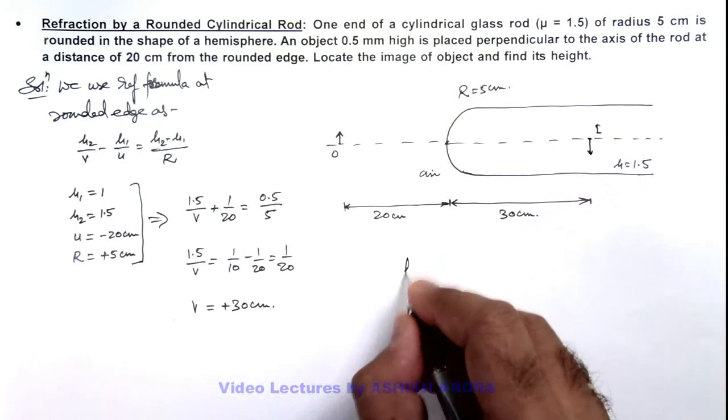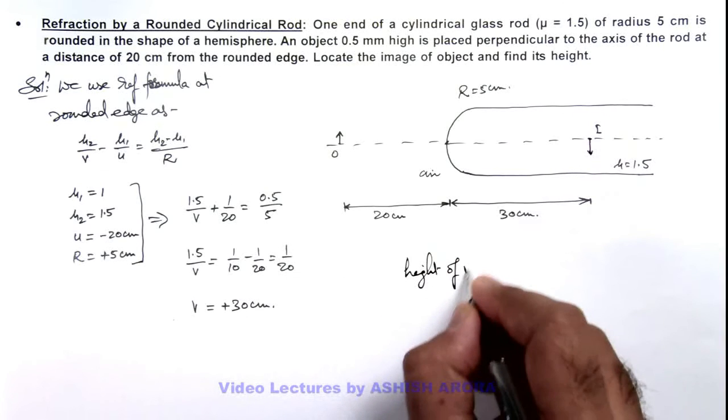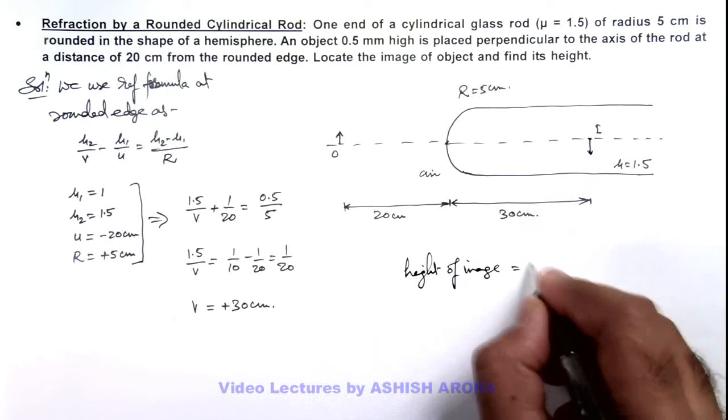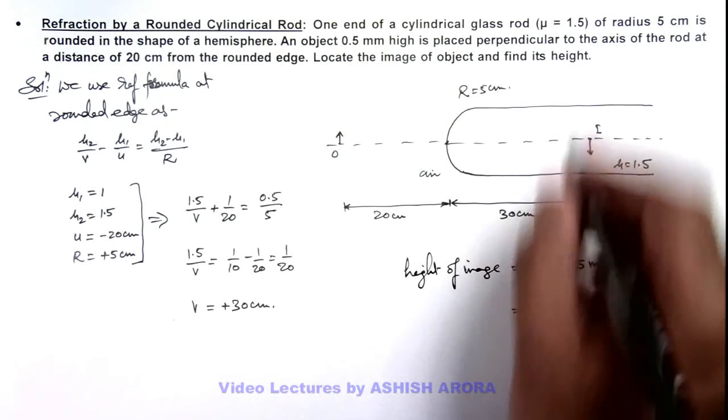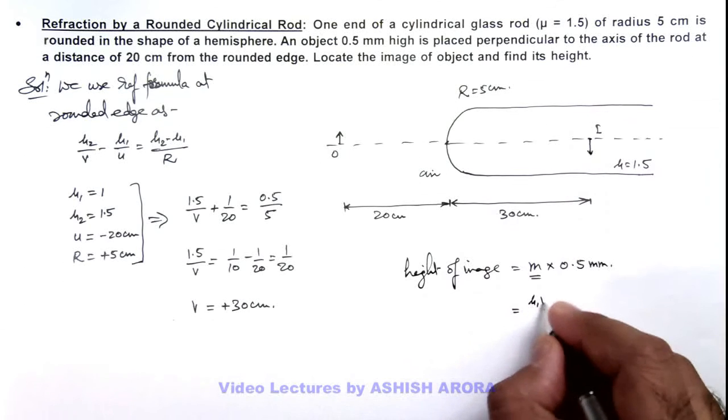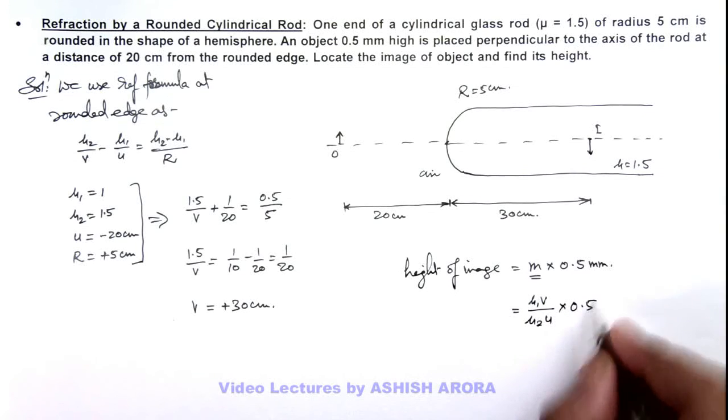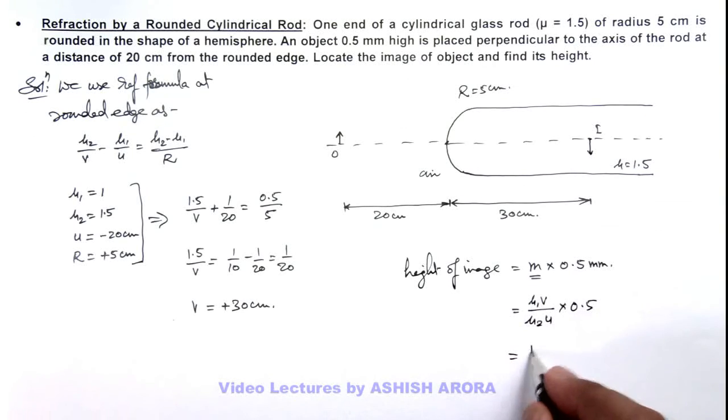And here if we calculate the height of image, that can be given as magnification times the height of object which is 0.5 mm. And here the magnification formula normal to principal axis we can use as μ₁v/(μ₂u), and this multiplied by 0.5. So here the value of μ₁ is 1, v is 30, divided by μ₂ is 1.5, and u is 20, multiplied by 0.5. You can see this magnification is coming out to be unity. So the height of image we are getting is same as height of object, which is 0.5 mm.